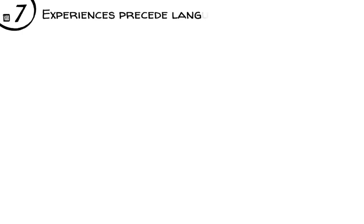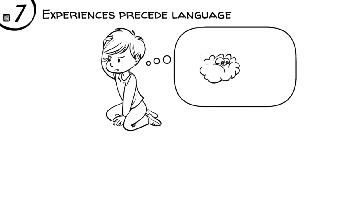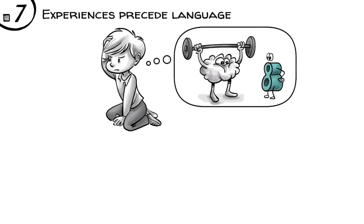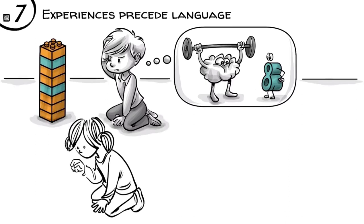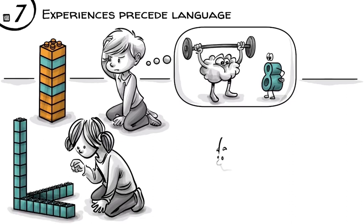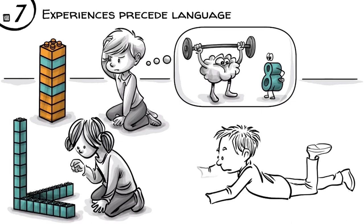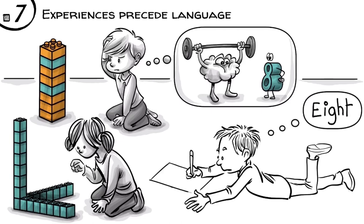Experiences precede language. As we demonstrated, it takes a child a lot of mental training and hands-on experiences to form the concept of a number. At the age of five, we can build a simple row of eight, later form eight square then eight root. Only once we have constructed number concepts inside our heads, can we effectively learn how to express them with images, symbols and language.